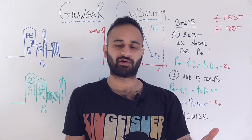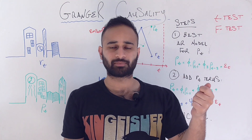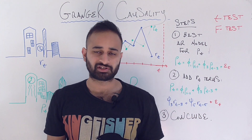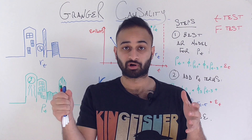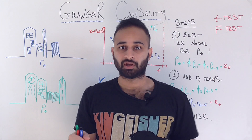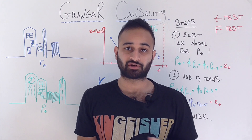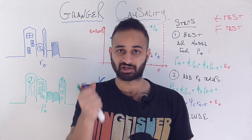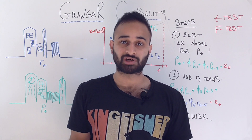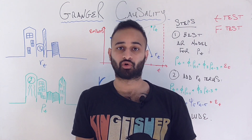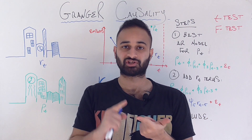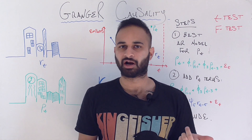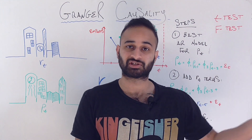One very specific thing we might care about in that situation is whether one time series is the cause of another time series. To give a concrete example, let's say you live in a neighborhood and house prices in your neighborhood go up for whatever reason. What you might expect sometime in the future is house prices in a surrounding neighborhood that's close to yours might also go up, because house prices tend to be tied geographically. So these two time series might be linked — one might be the cause of the other — and we might care about this because it will help us predict house prices in the future.